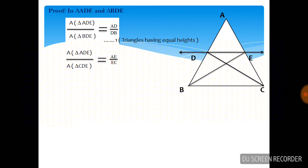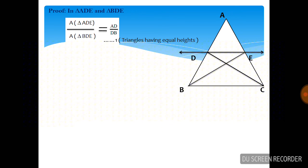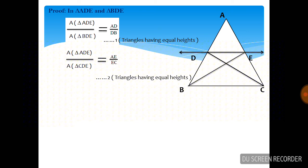Similarly, we take another pair: triangle ADE and triangle CDE. To prove AD/DB = AE/EC, we already got AD upon DB from the first equation. Now to get the ratio AE upon EC, we use triangles ADE and CDE. Their bases AE and EC lie on the same line and they have one common vertex opposite to their bases, so their heights are equal. This gives us equation 2, also using property 1.